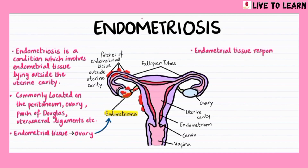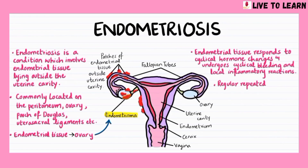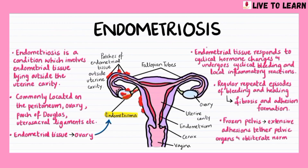Endometrial tissue responds to cyclical hormone changes and undergoes cyclical bleeding and local inflammatory reactions. Regular repeated episodes of bleeding and healing lead to fibrosis and adhesion formation. In extreme cases, a frozen pelvis results where extensive adhesions tether the pelvic organs and obliterate the normal pelvic anatomy.